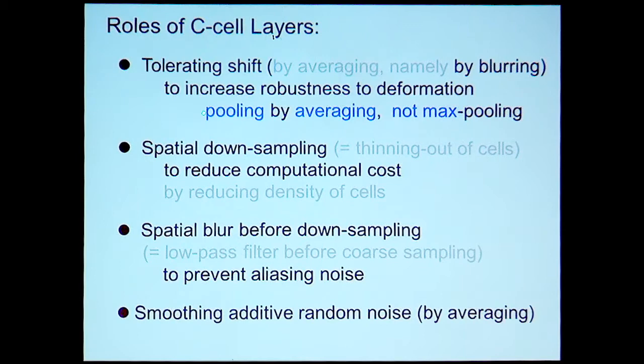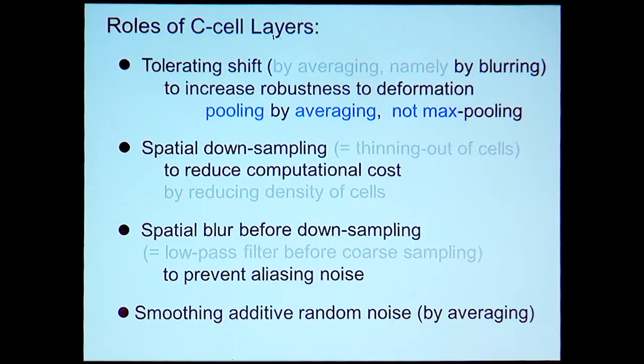The role of the C-cell layer is the function of tolerating shift by blurring, which increases robustness to deformation. Different from conventional deep neural networks, pooling in the Neocognitron is made by averaging, not by max pooling. In the C-cell layer, we do some downsampling to reduce computational cost, and we perform a blurring operation as a spatial low-pass filter before coarse sampling to prevent aliasing noise.